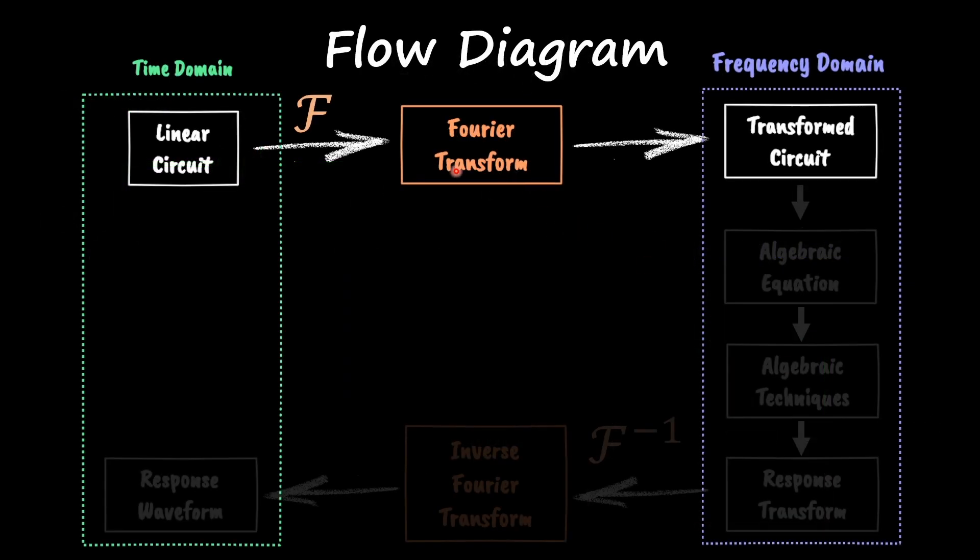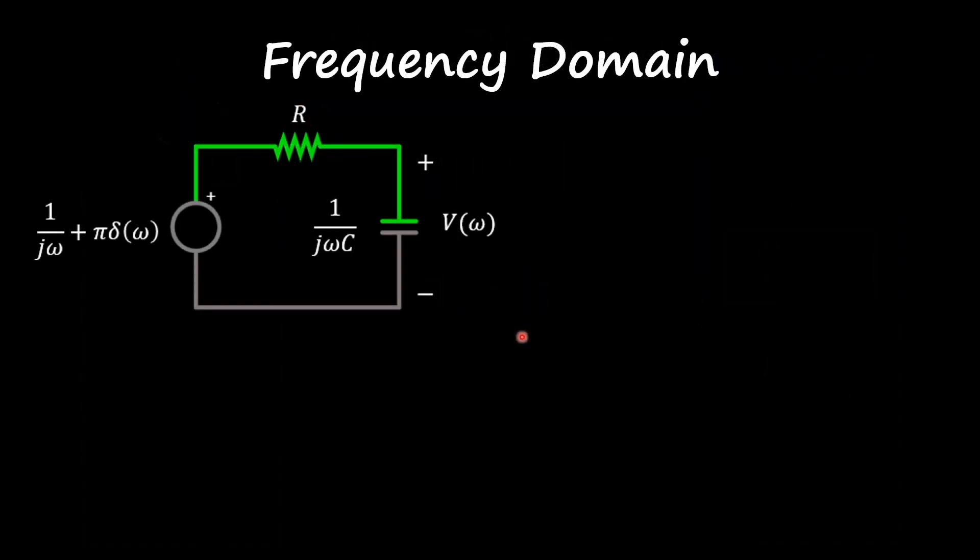That first part is done—we have our transformed circuit. Now we're going to extract the equation out of our transformed circuit using a set of tools similar to what we did with Laplace. Because we are in the frequency domain, Ohm's law is now stated by this equation: V(ω) = Z·I(ω). The only difference is instead of having R, we now have impedances, but we can treat this circuit as a resistive circuit.